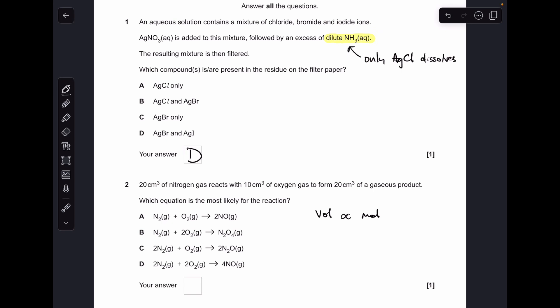Number two. The important thing to appreciate is that volume is proportional to moles. So if we've got 20 cm³ nitrogen, 10 cm³ oxygen, and 20 cm³ gaseous product, basically in terms of moles we've got 2 to 1 to 2. Which equation's got that ratio? It's C.